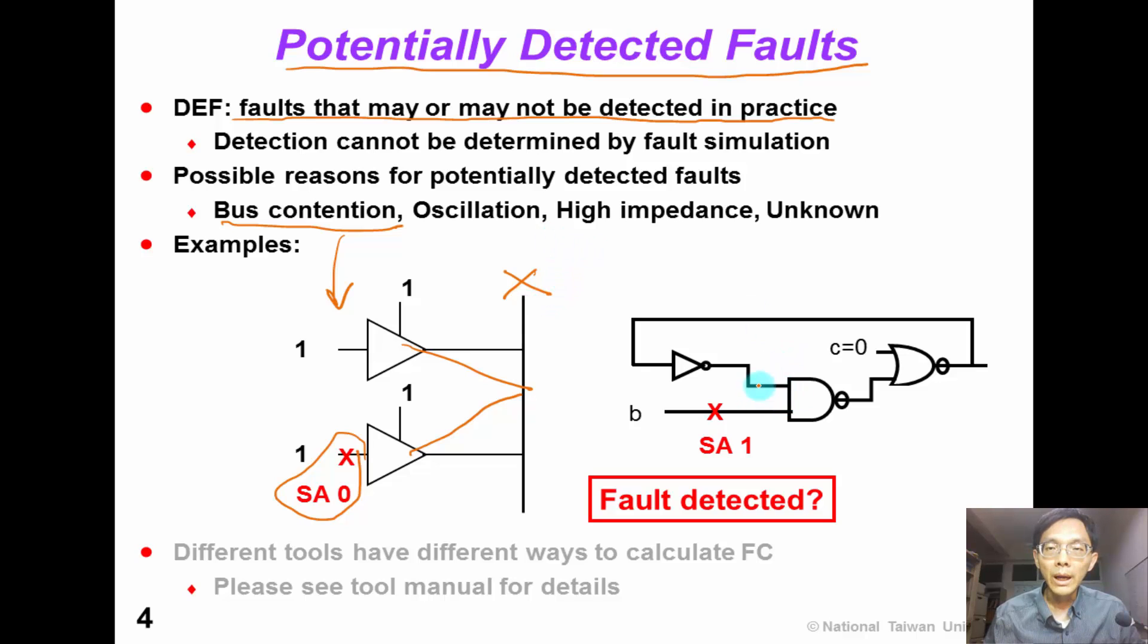On the right-hand side, we have a feedback loop in the circuit. Consider this stuck-at-1 fault. With this stuck-at-1, we can have an oscillation in this loop, so we don't know whether this fault is detected or not.